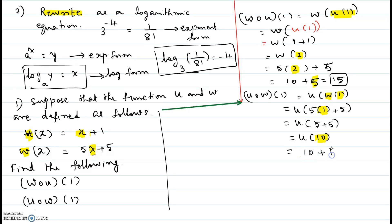So 10 plus 1 which is equal to 11. So u composite w at 1 equal to 11. And w composite u at 1 equal to 15.